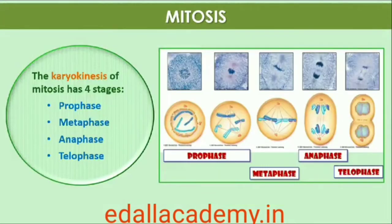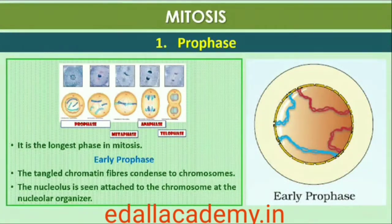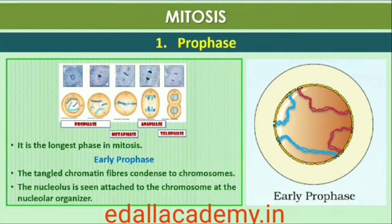Mitosis is divided into the following four stages: Prophase, Metaphase, Anaphase, and Telophase. Prophase, which is the first stage of mitosis, follows the S and G2 phases of interphase. In the S and G2 phases the new DNA molecules formed are not distinct but intertwined. Prophase is marked by the initiation of condensation of chromosomal material.